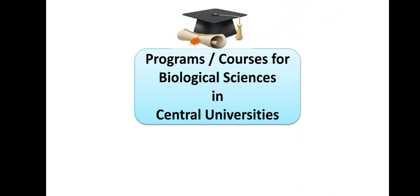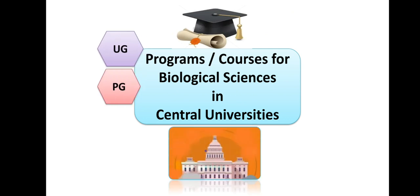So here, the programs and courses available in Central Universities are UG courses — that is BSc, MSc, and PhD. But which subjects are available, in which universities, these details students often don't have, and here confusion arises about how to get admission and procedures. This video will tell you about all the details of the courses, mode of admission, the website for those universities, and everything. So watch this video till the end.